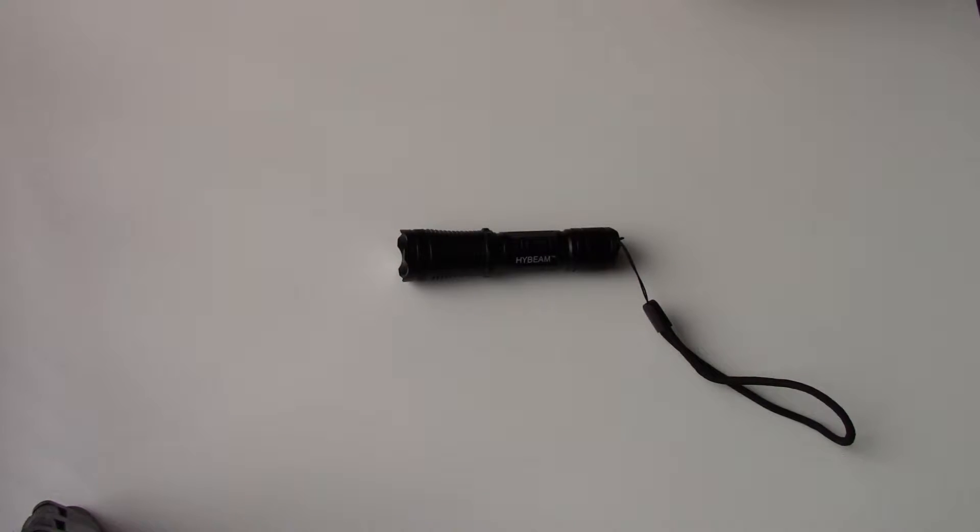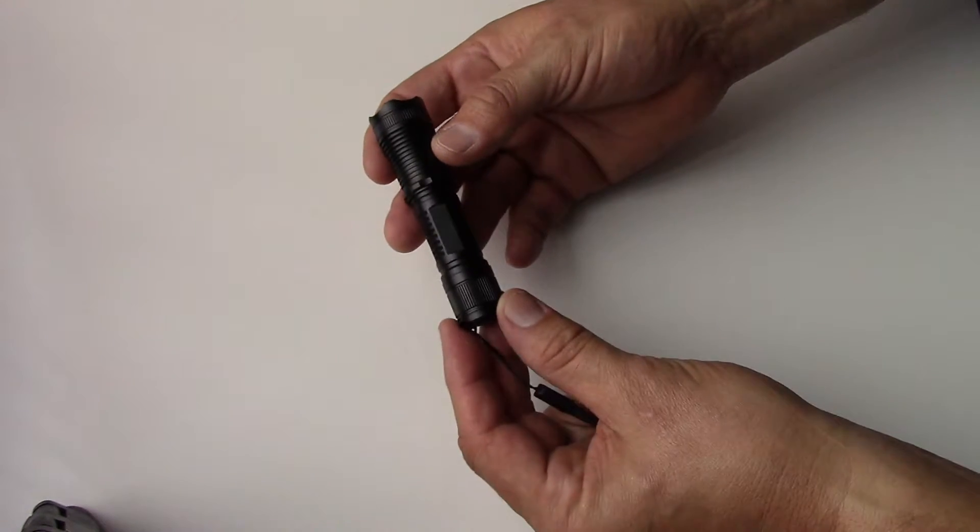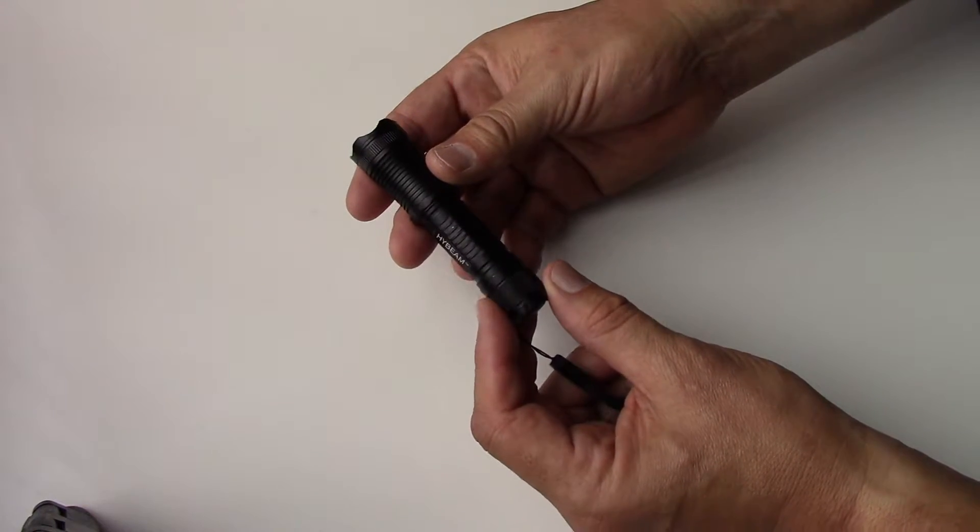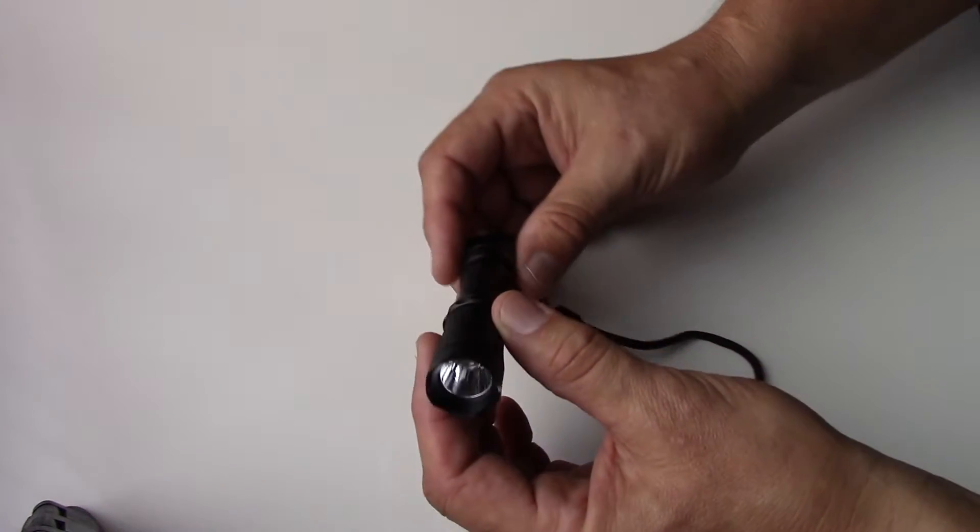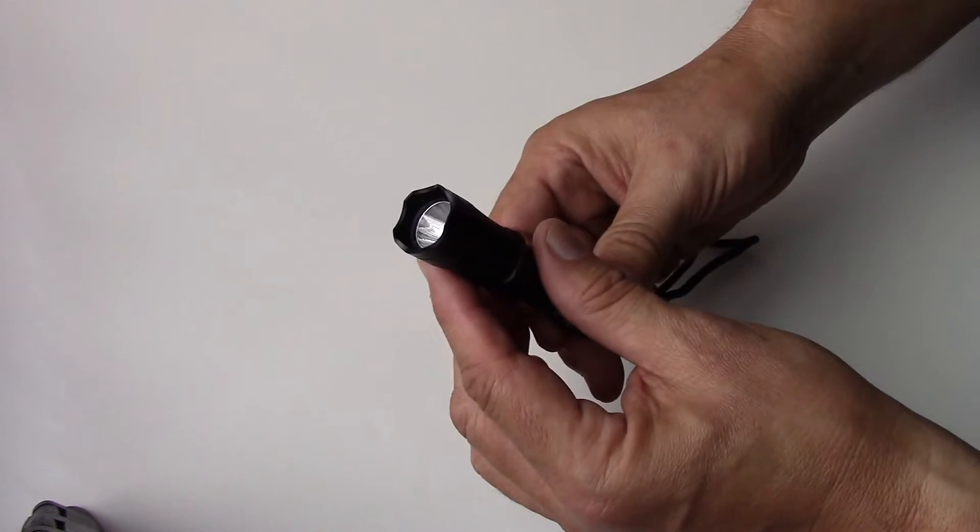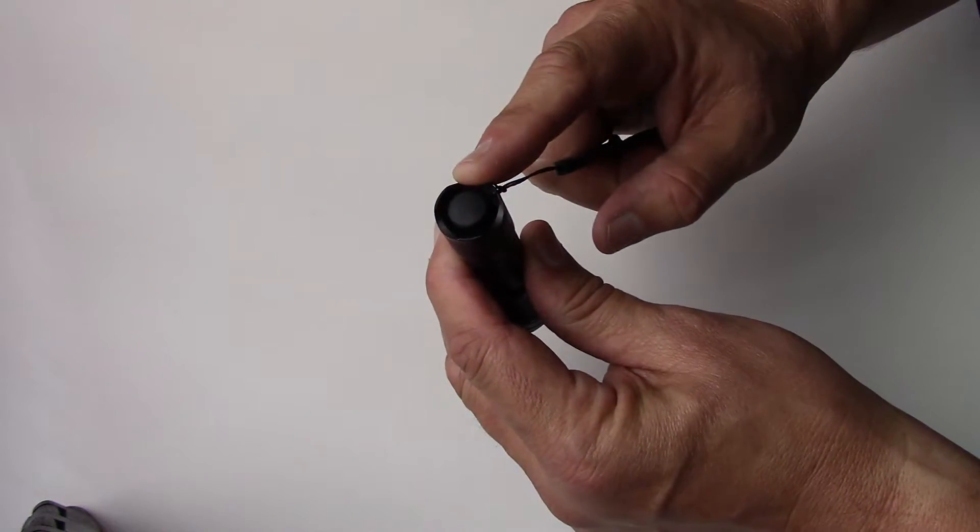Today I would like to review the High Beam Tactical Flashlight. I love this flashlight. It's made of aircraft aluminum, so it's very durable. It has a very bright bulb, we'll see in just a moment. It has defense tool features and a three-position switch, including a strobe light.